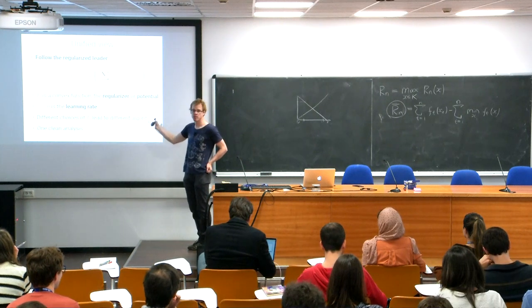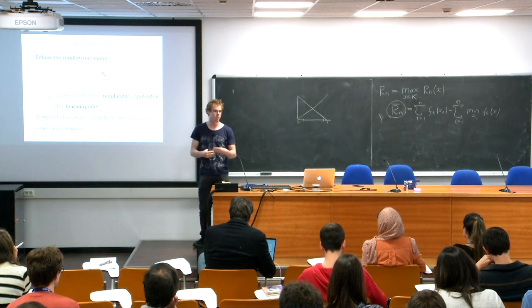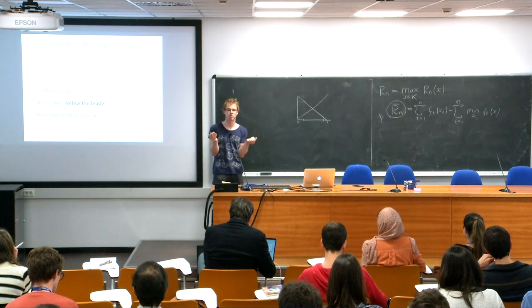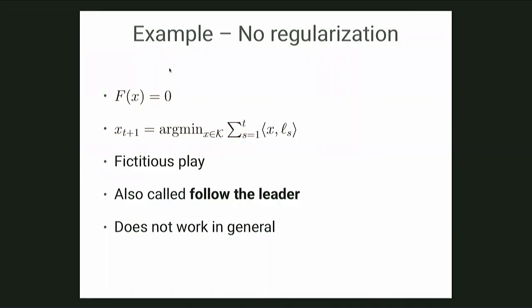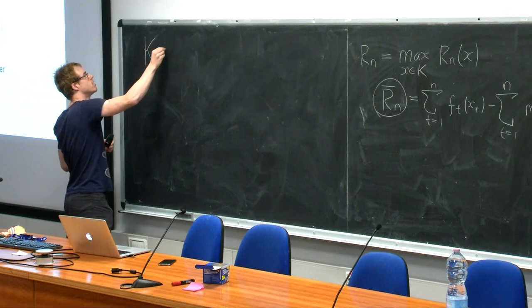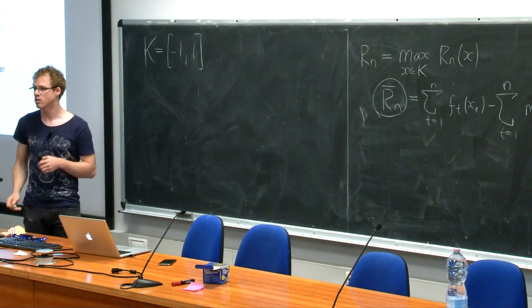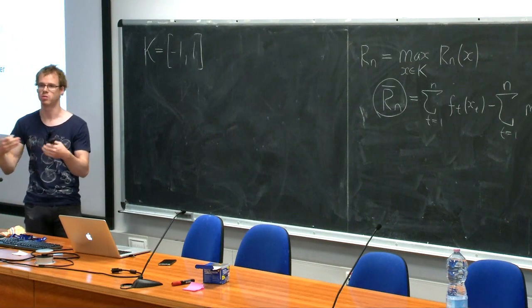Without regularization — Φ(x) = 0 — we get fictitious play, and I'll now show why that doesn't work. The problem is instability. Consider K = [-1, 1]. The algorithm starts at x_1 = 0.